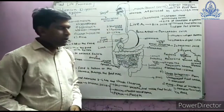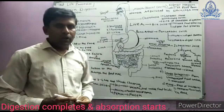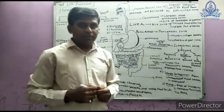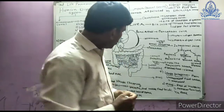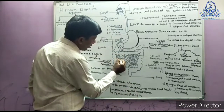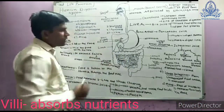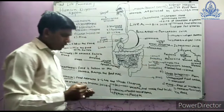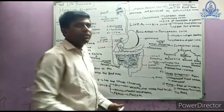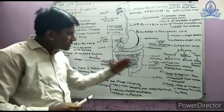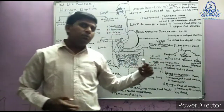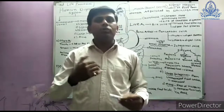At this point, digestion is completed. Now the absorption part begins. The digested food is absorbed through the inner wall of the small intestine, where there are small finger-like projections called villi. Villi are finger-like projections which absorb the digested food. This digested food is then assimilated into the blood, and through the blood it is delivered to all the different organs of the body, giving us energy.